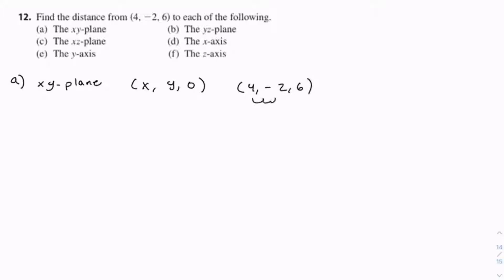Since the x and y components don't matter, we can just look at the z-component, which is 6. And we know that 6 is 6 away from 0, or the xy-plane. So this is 6 units away from the xy-plane. That's the distance.